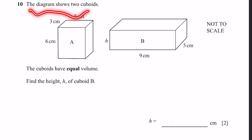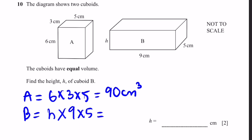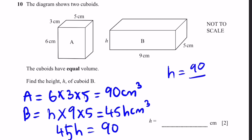Question 10. The diagram shows two cuboids with equal volume. Find the height H of cuboid B. Volume of cuboid A is 6 × 3 × 5 = 90 cm³. Volume of cuboid B is H × 9 × 5 = 45H cm³. Since volumes are equal, 45H = 90, so H = 90/45 = 2 centimeters.